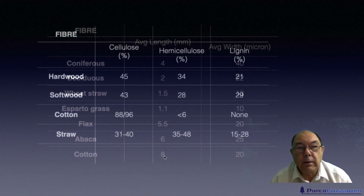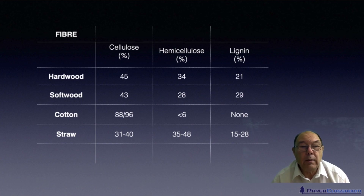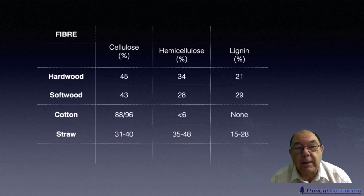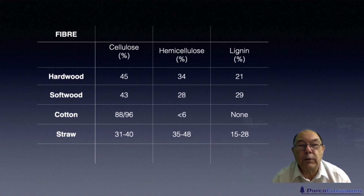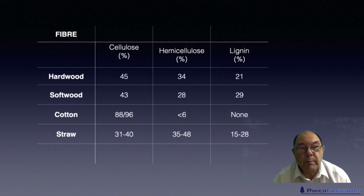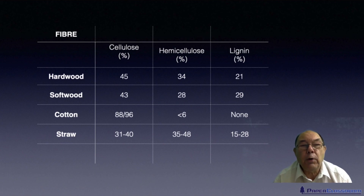The final table looks at four fibres — a hardwood fibre, a softwood fibre, cotton and straw — just to look at their brief chemical composition. Fibres have five broad chemical components: cellulose, hemicellulose, lignin, extractives and ash — but cellulose, hemicellulose and lignin are the three dominating ones. As you can see, cotton has by far the most cellulose content, almost 96%, and virtually no lignin.